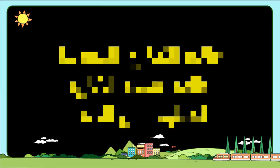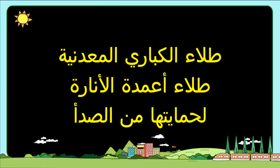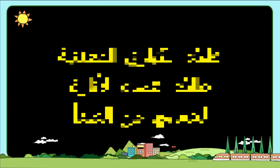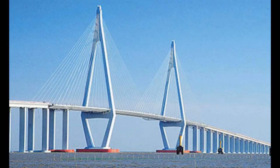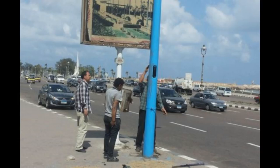طيب إيه التطبيقات الحياتية اللي موجودة في حياتنا وبنستخدم فيها الفكرة دي؟ أولا: طلاء الكباري المعدنية وأعمدة الإنارة بين الحين والآخر، لحمايتها من الصدق. ثانيا: تغطية قطع غيار السيارات بطبقة من الشحم، والسبب برضو لحمايتها من الصدق.